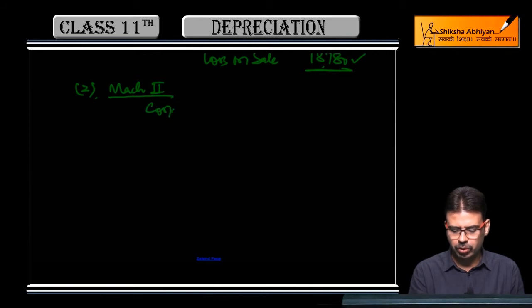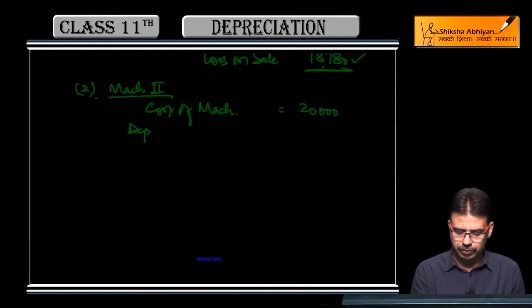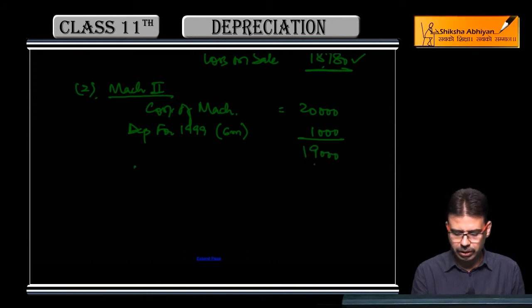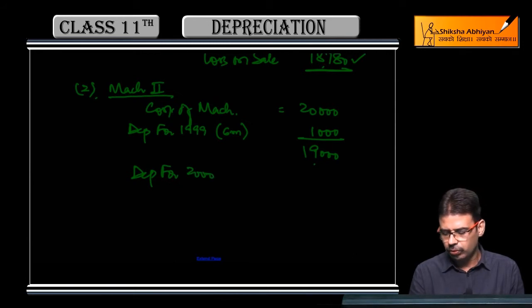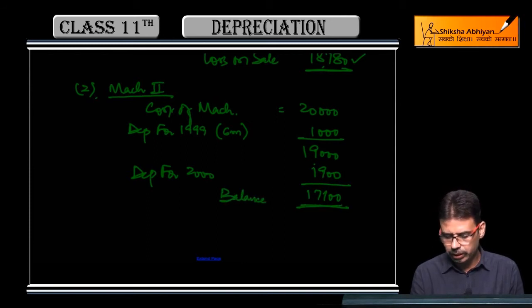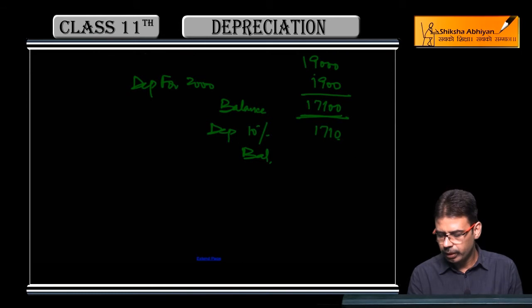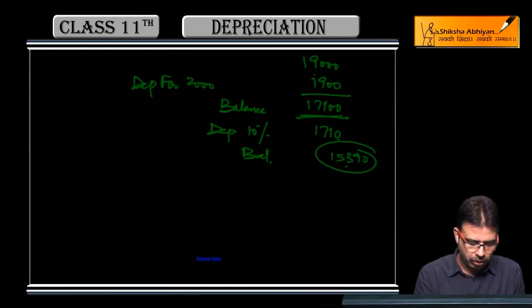Machinery 2: Cost of machinery was 20,000. Depreciation for year 1999, first year, six months depreciation we applied, 1,000. Balance 19,000. Depreciation for 2000 full year 1,900, balance 17,100. On that we applied 10 percent depreciation, 1,710 rupees. For your convenience, if you want you can also calculate the remaining balance: 15,390. That's machinery 2's remaining balance.